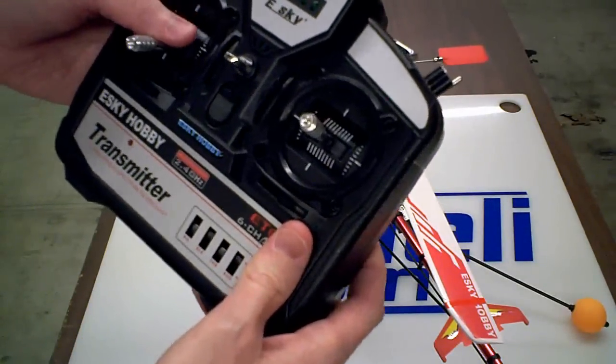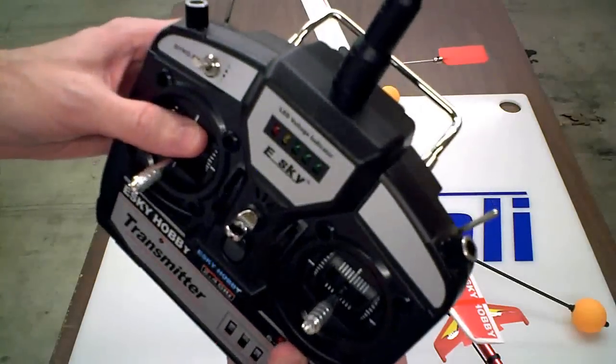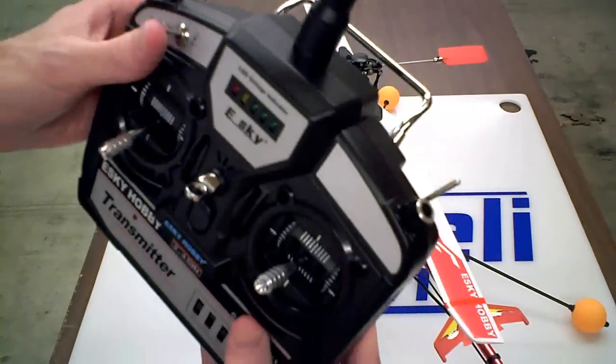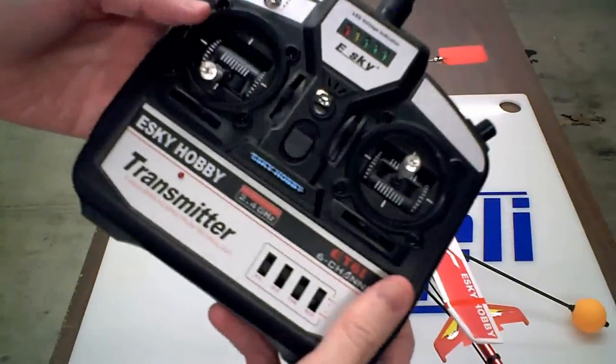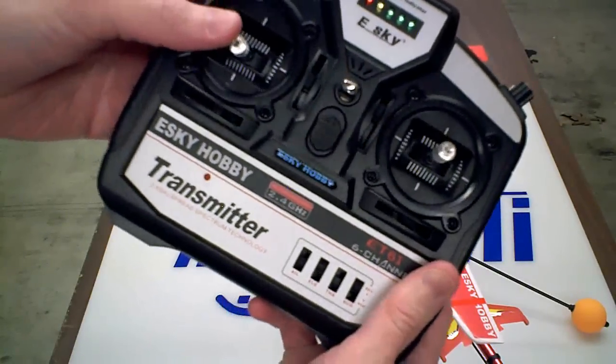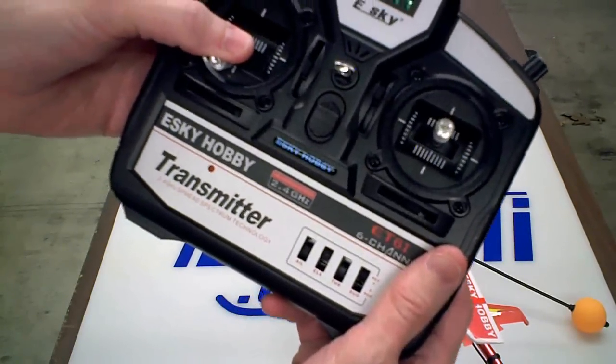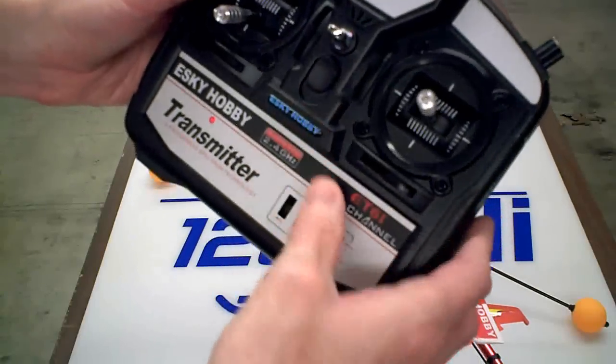Okay, before you power on your radio, make sure that all your switches are towards the back end of the radio. Make sure your throttle is all the way down. And go ahead and power it on.